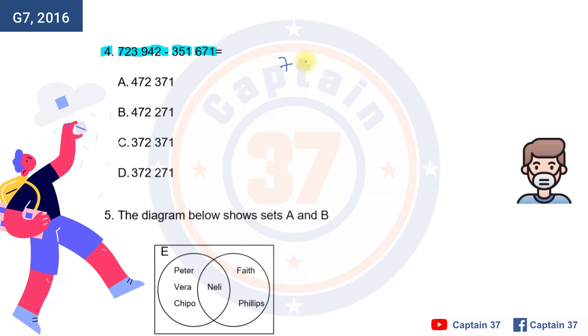So there is 723,942. We have to take away 351,671. Remember, always put the symbol there to show what functional calculation you're doing. So let's get started.